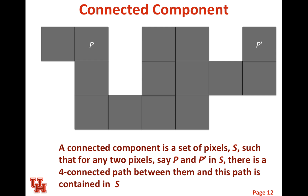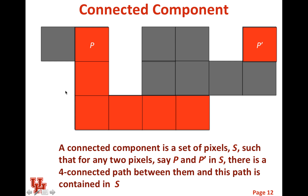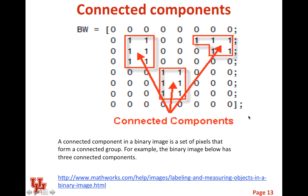We say that a connected component is a set of pixels S such that if you pick any two pixels — say p and p-prime — and they're both in S, they are part of the same connected component if there's a 4-connected path between them and this path is contained in S. A 4-connected path means we can walk from p to p-prime without ever leaving S, where every step follows the 4-connectivity rule. So p and p-prime are connected in the same connected component.